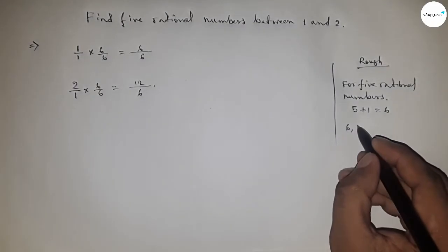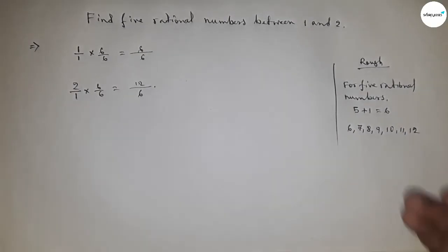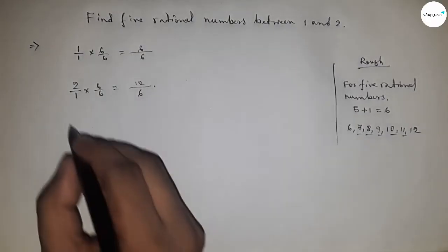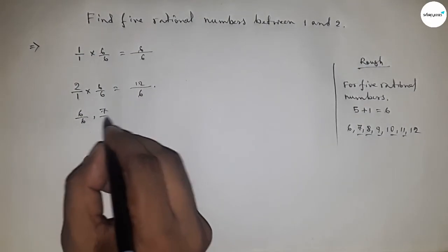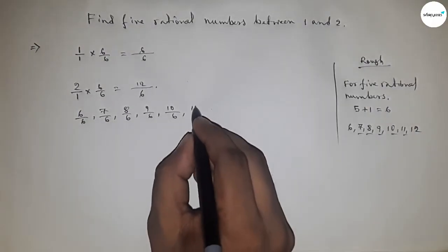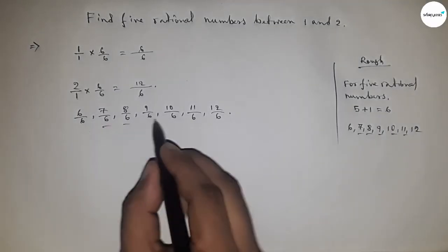6. So between 6 to 12, we got 5 numbers, and by these numbers we can form 5 rational numbers. So first 6 by 6, 7 by 6, up to 12 by 6, and between these we